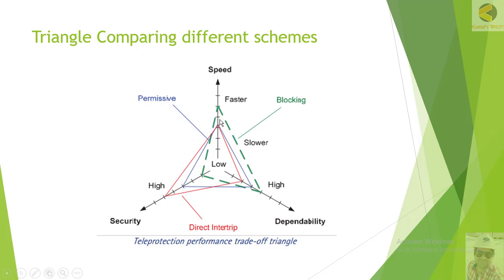Looking at speed, the direct transfer trip scheme and the permissive scheme both have similar speed, whereas the blocking scheme has the highest speed.